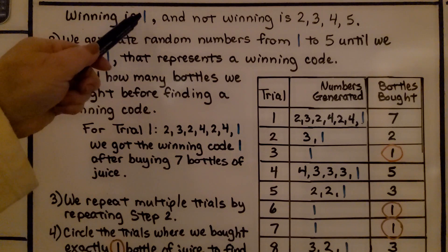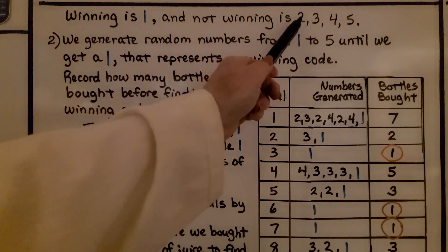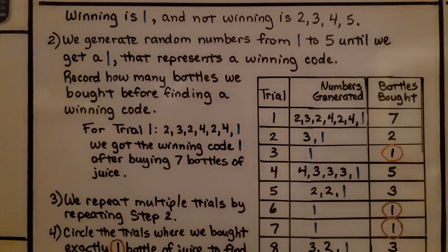So winning is a 1, and not winning will be 2, 3, 4, and 5. We generate random numbers from 1 to 5 on our graphing calculator or from the internet until we get a 1 that represents a winning code. We record how many bottles we bought before finding a winning code.